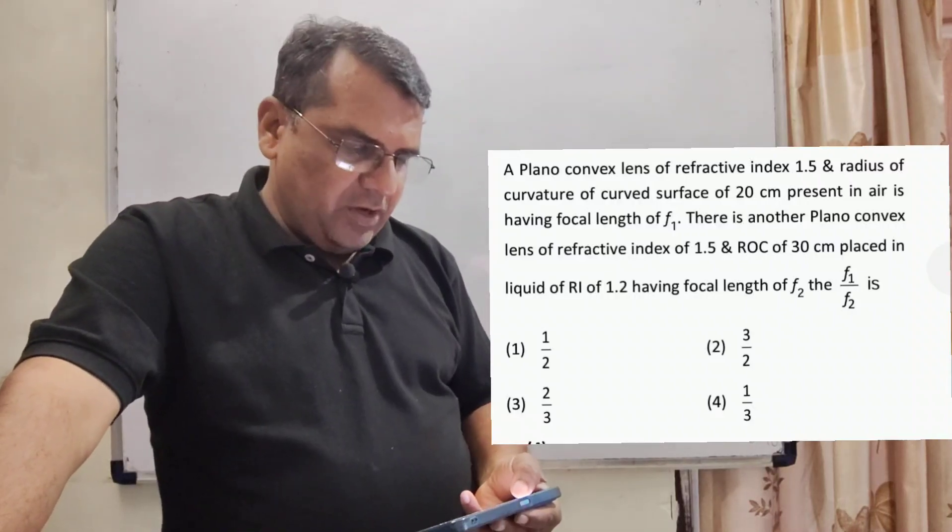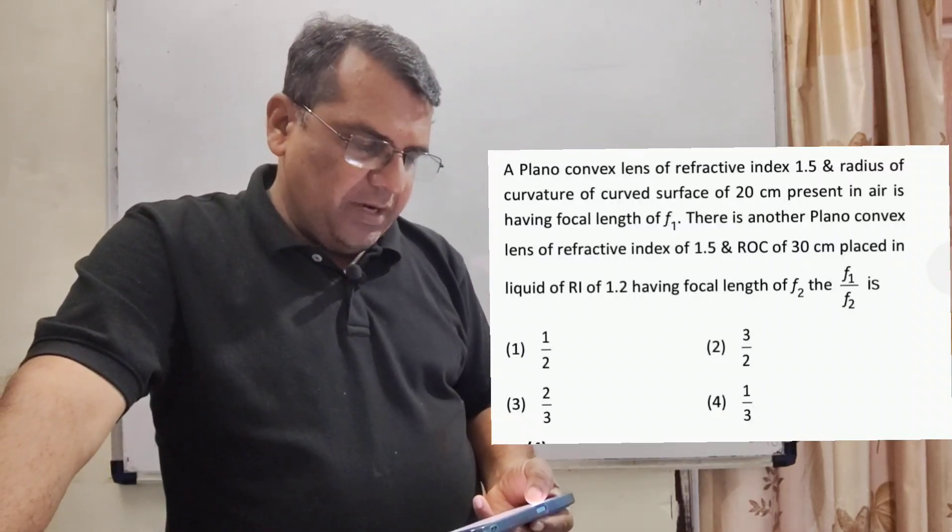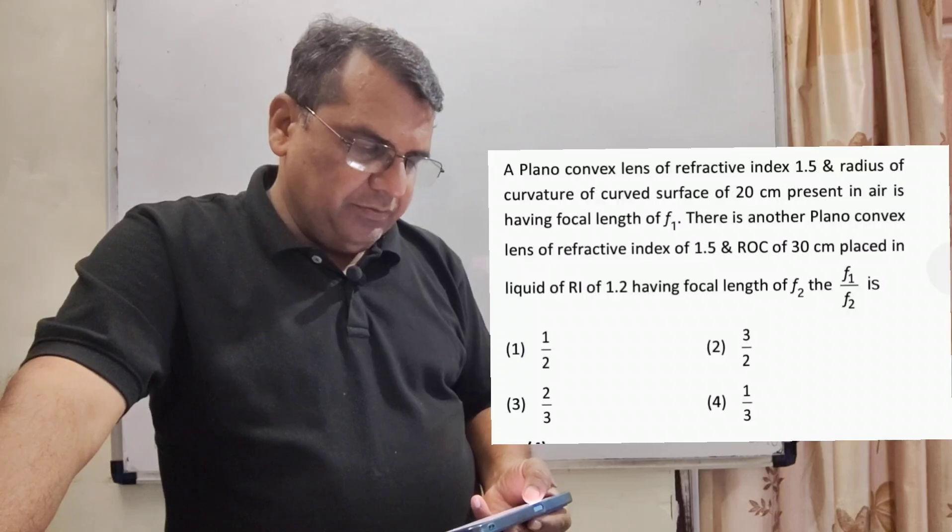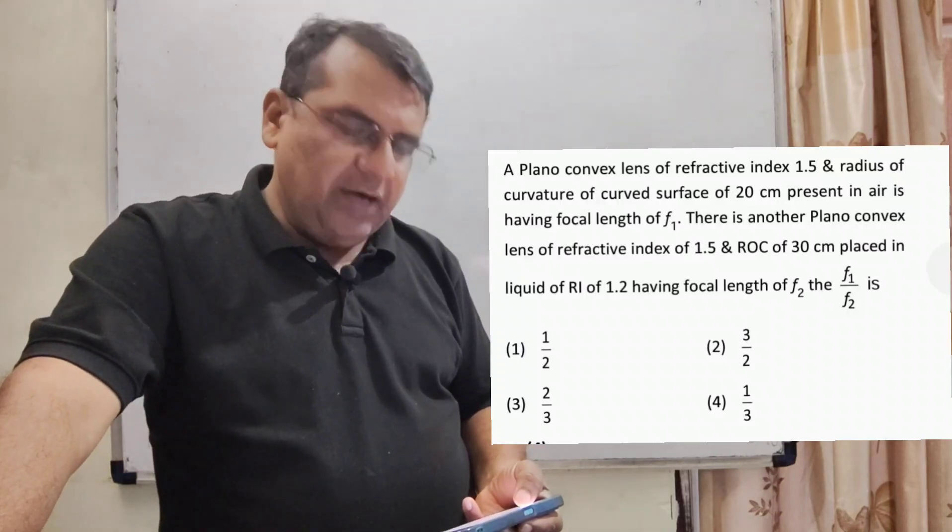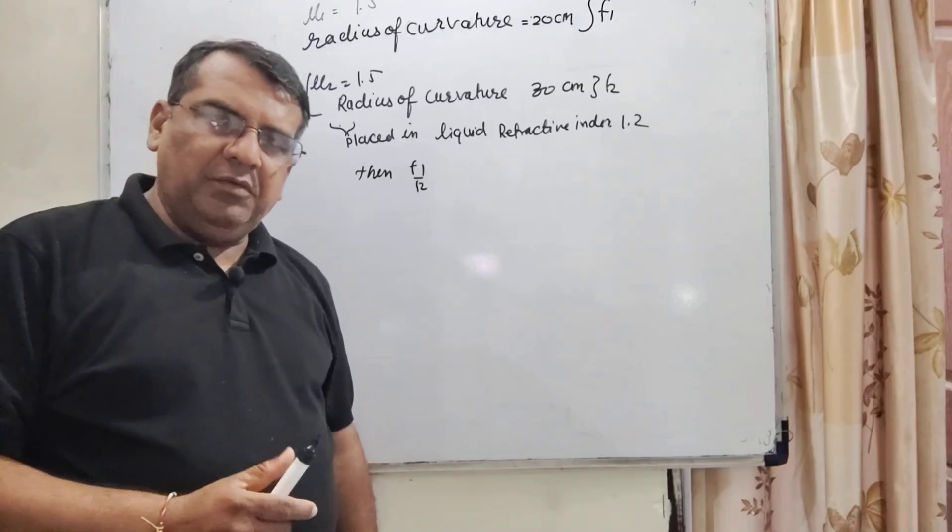The f1 by f2 is, here we have given options: first 1 by 2, second 3 by 2, third 2 by 3 and fourth 1 by 3.